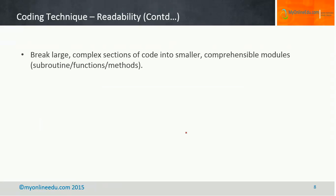Moving to the next point about readability: break large, complex sections of code into smaller, comprehensible modules. That is why functions, subroutines, procedures, and methods come into the picture. The suggestion here is to try to break your code into smaller modules, each performing a particular task. If you break your large code into small modules, it will be much more readable and also much more maintainable in the future.